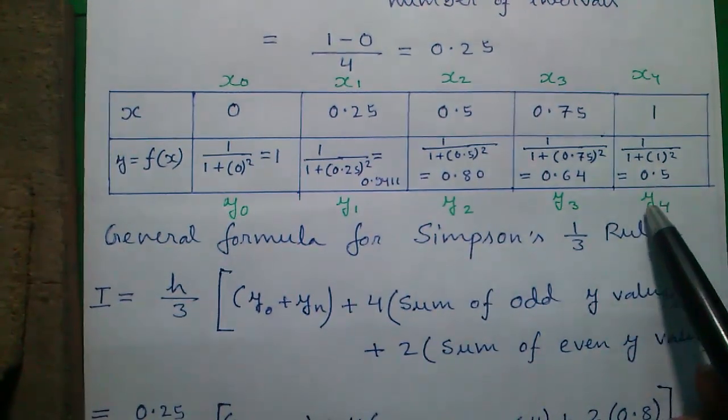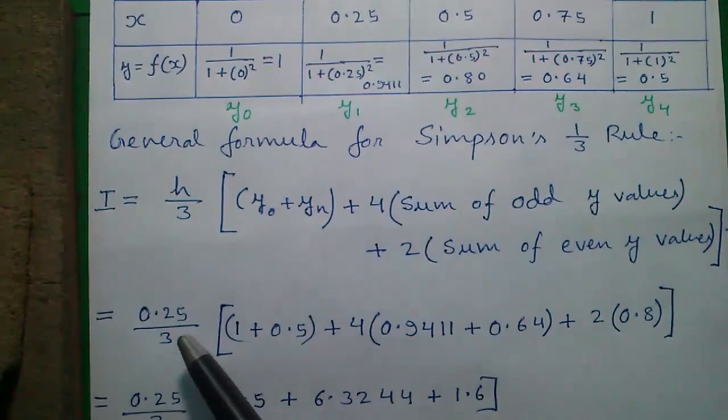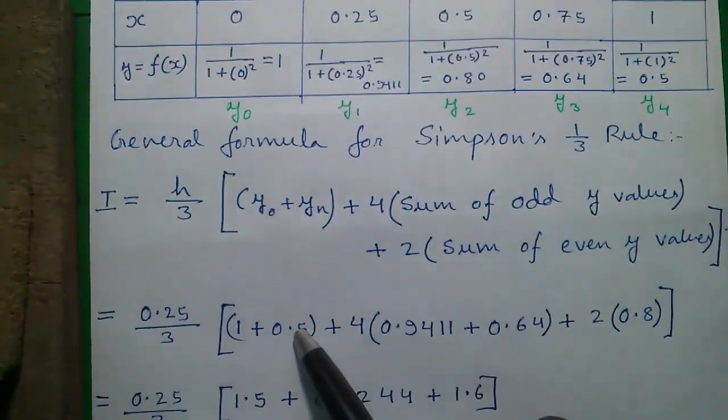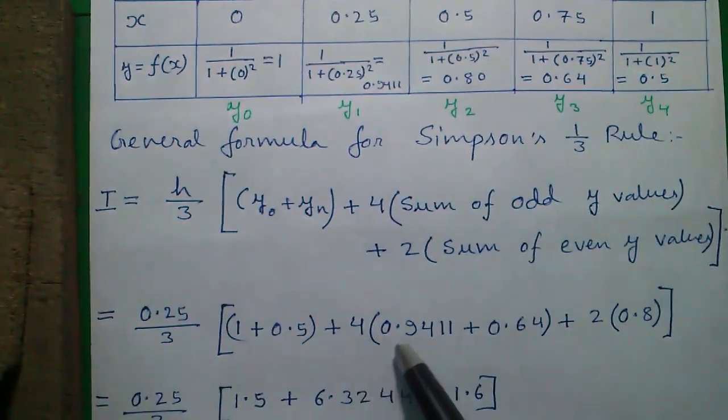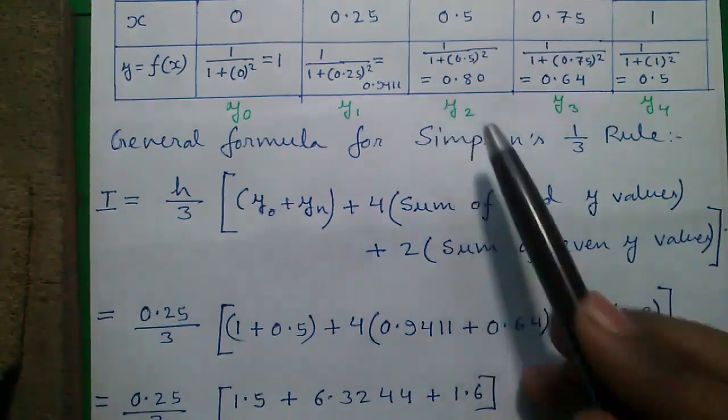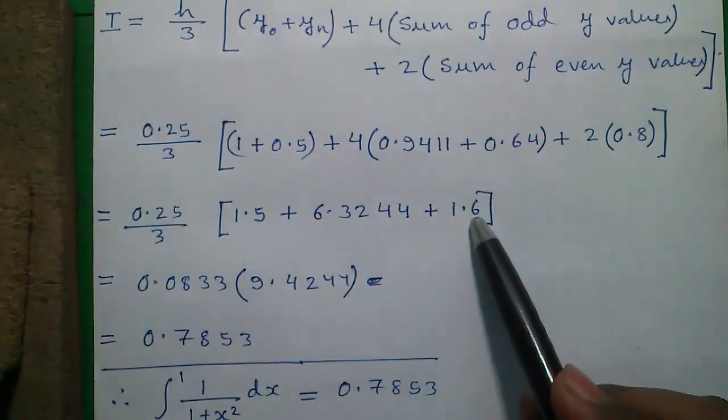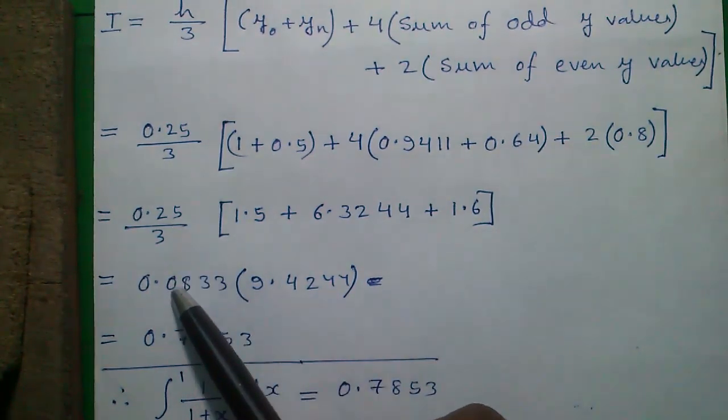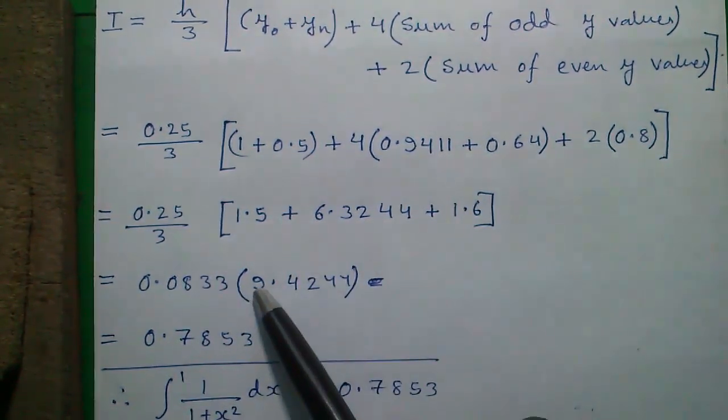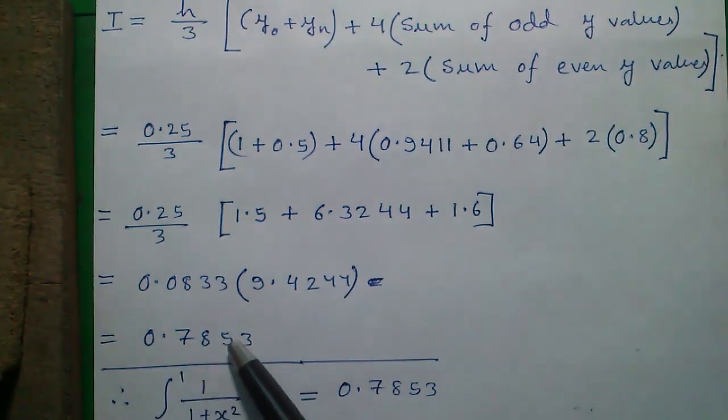In this case, y4 is taken as yn. So we will only take y2. So now putting the values 0.25 by 3 plus y0 plus yn plus 4 into y1 plus y3 plus 2 into y2 which gives us 0.25 by 3 is 0.0833 into adding this 9.4244 which will give you 0.7853.